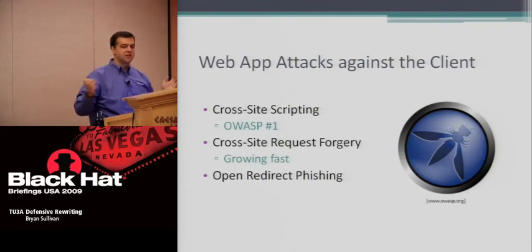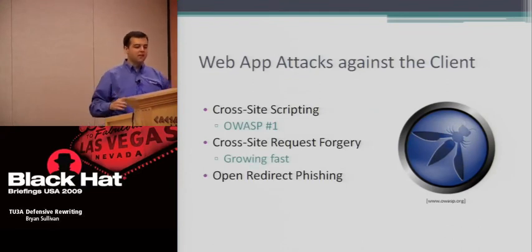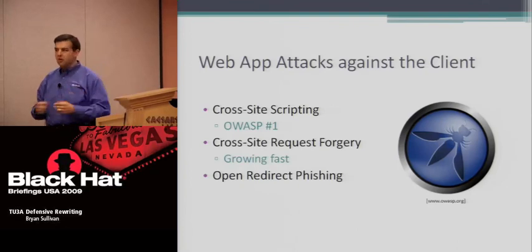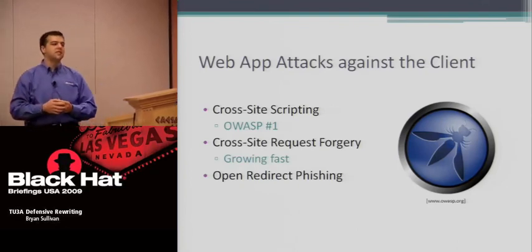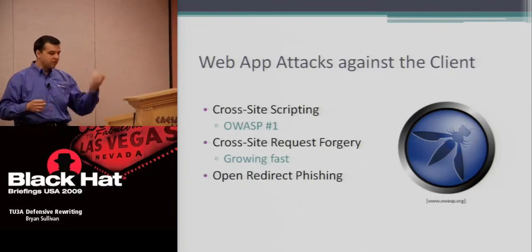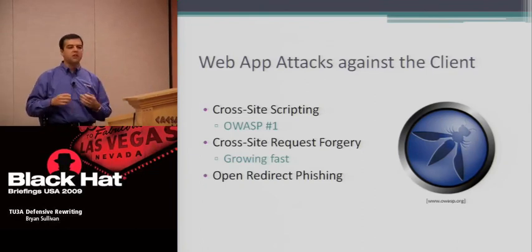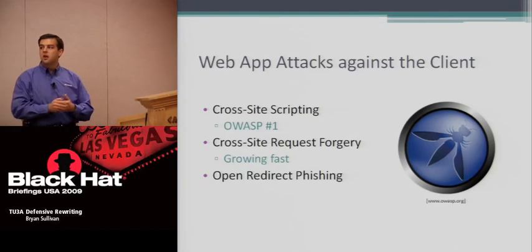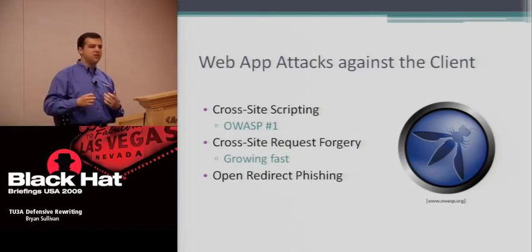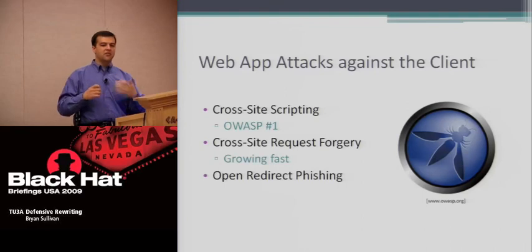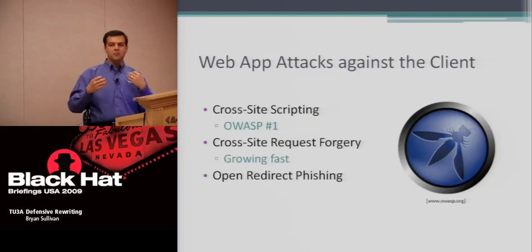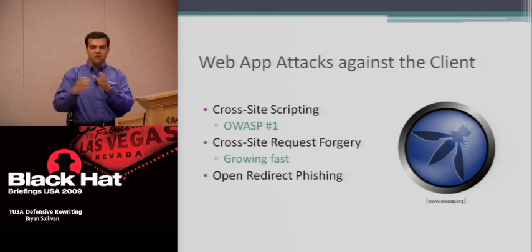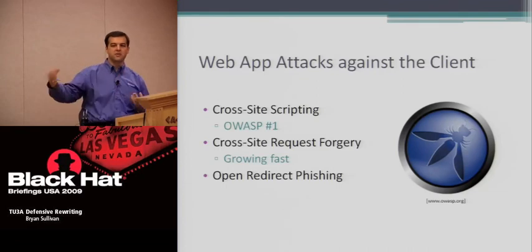This would include cross-site scripting — the OWASP number one attack — cross-site request forgery, another very popular attack, and open redirect phishing, which also falls under this umbrella. Open redirect phishing happens when a server accepts a parameter from a user and then redirects to whatever value is specified in that parameter.